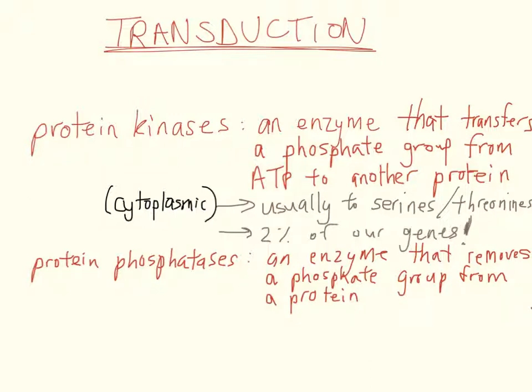Usually shape change in proteins in this pathway is what allows the message to pass along. A very important method of bringing about this change is phosphorylation. And what brings about phosphorylation? These are enzymes called protein kinases. These are enzymes that transfer a phosphate group from ATP to another protein.